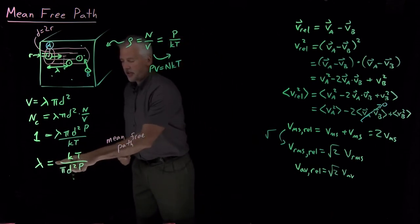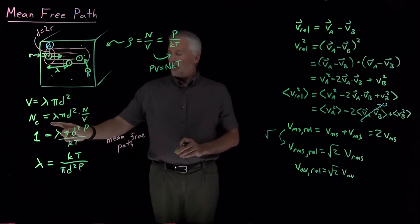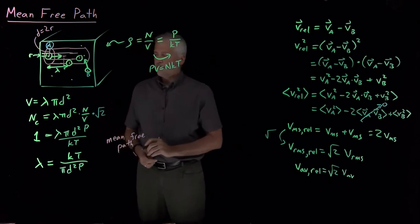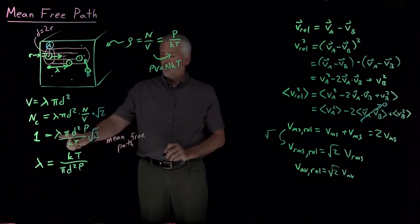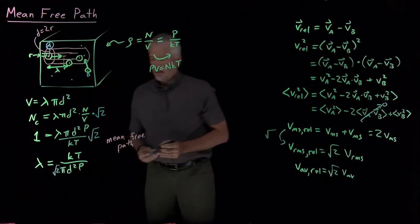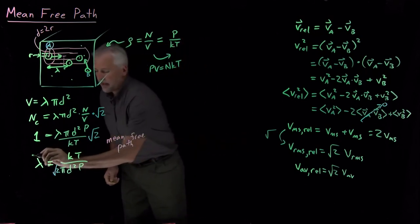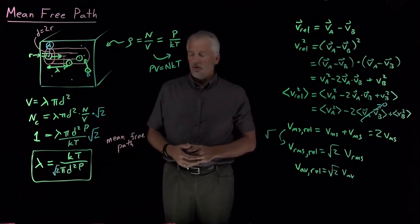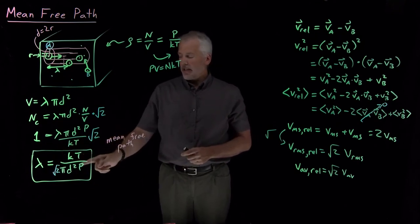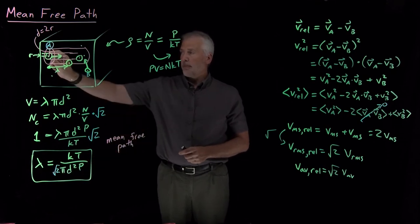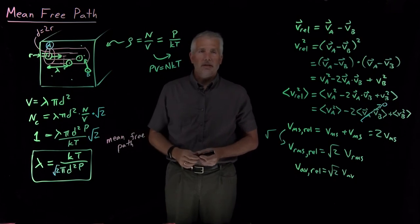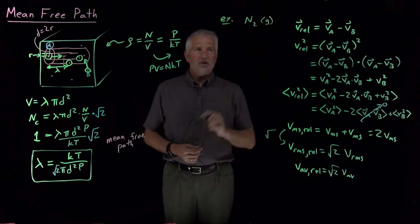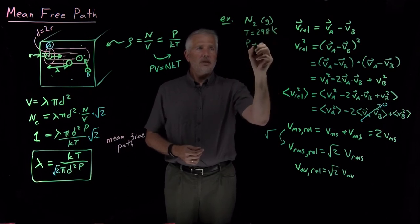We need to include an extra factor of square root of 2 in our collision count. The number of collisions is square root of 2 times larger than before. Going back and inserting this correction factor, when we solve for lambda the square root of 2 ends up in the denominator. This gives our final result for the mean free path: lambda equals kT divided by (root 2 times pi times d squared times P), where d is the diameter of the molecule.